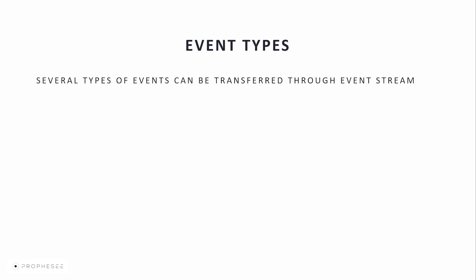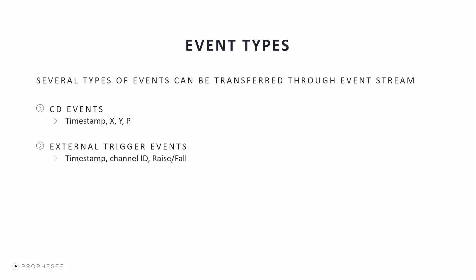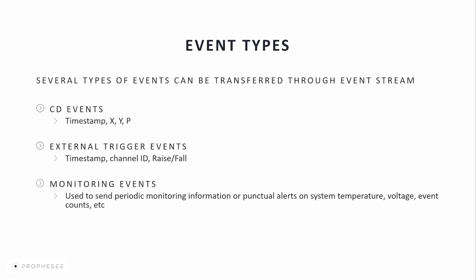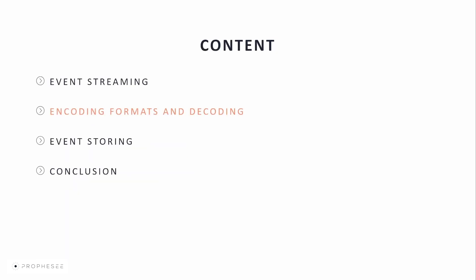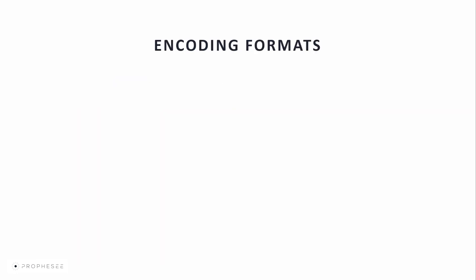Several types of events can be transferred through the event stream: CD events including the timestamp, X, Y, and polarity; external trigger events used for synchronizing the sensor with other external devices, including the timestamp, channel ID, and the rise and fall of the signal; monitoring events used to send periodic monitoring information or punctual alerts on system temperature, voltage, event counts, etc. Other events like IMU and stereo are possible but not necessarily implemented within the MetaVision SDK. The main encoding formats used to stream events from the sensor are EVT2 as the default format for our Gen3 sensors.